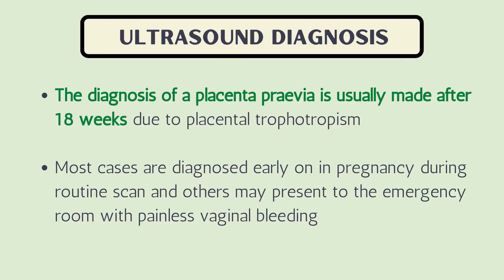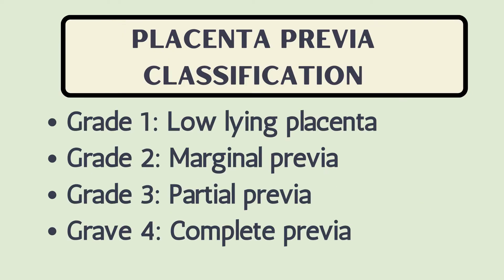Ultrasound diagnosis of placenta previa is usually made after 18 weeks due to placental trophotropism. Most cases are diagnosed early on in pregnancy during routine scan, and others may present to the emergency room with painless vaginal bleeding.